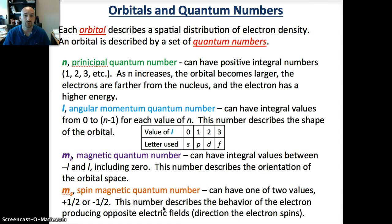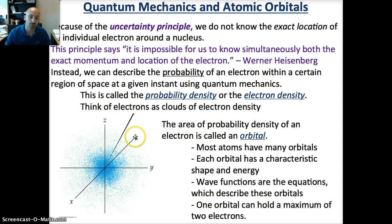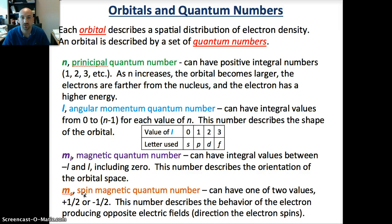When we talk about orbitals and quantum numbers, each orbital describes the spatial distribution of electron density. An orbital can be described by a set of quantum numbers. So what is a quantum number? It really just gives the position of the electron. The easiest way to think about this is if you think of a seat at a football stadium. You go to a game, you have your ticket, which is your orbital, and it tells you where your seat is - it gives you a section number, a row number, and a seat number.